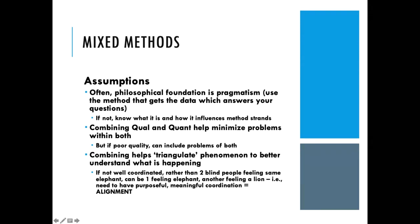Another assumption is that by combining quantitative and qualitative, it helps minimize the problems within both of those. Quantitative inherently focuses on numbers and tends to become more removed from lived experience, so the qualitative adds that piece. A purely qualitative study can sometimes get too subjective or interpretive, so the quantitative piece adds that other dynamic. However, if the mixed methods study has poor design, you end up with the problems of both — a well-designed study can have the strengths of both coming together.